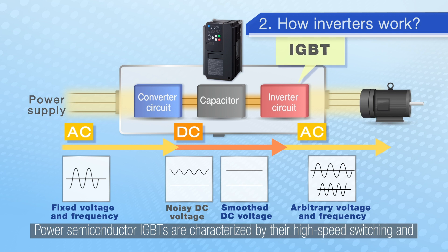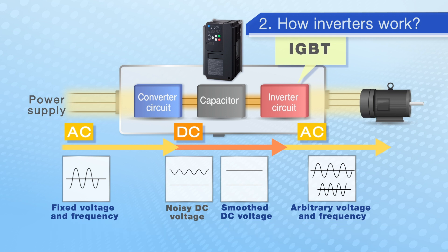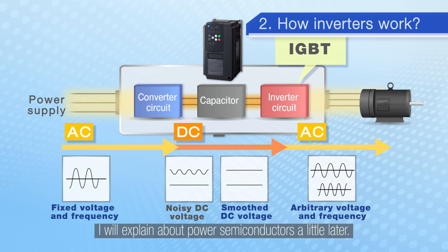Power semiconductor IGBTs are characterised by their high-speed switching and are used for converting the desired frequency and voltage in inverter circuits. I will explain about power semiconductors a little later.